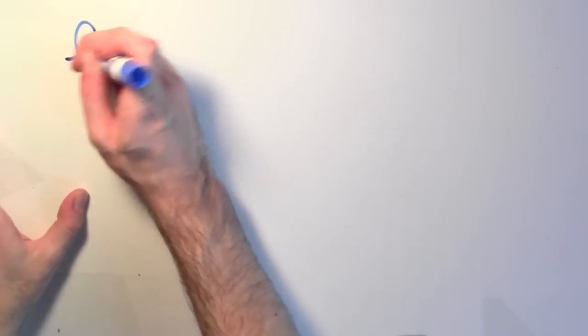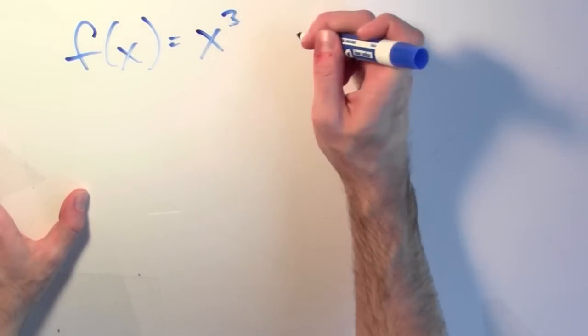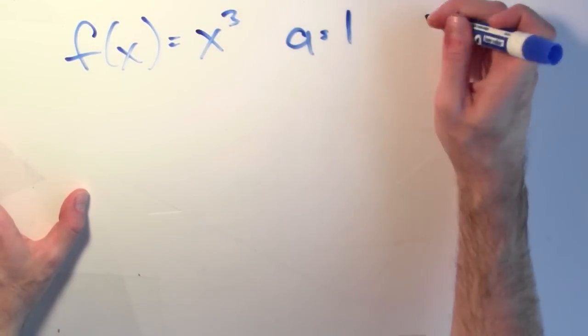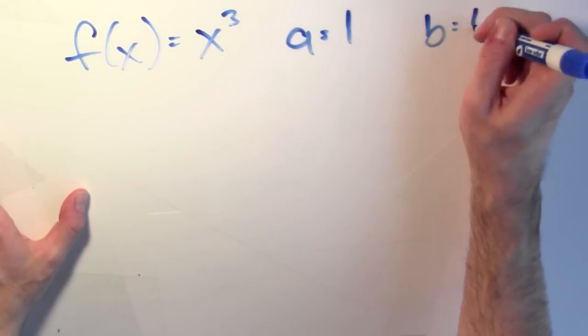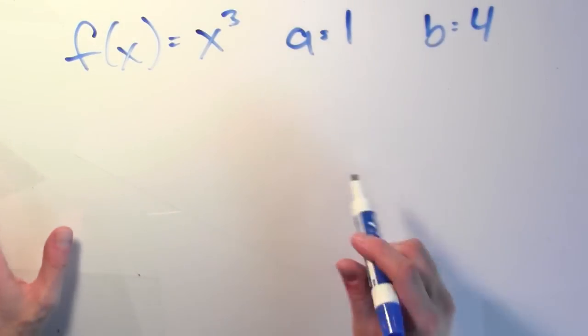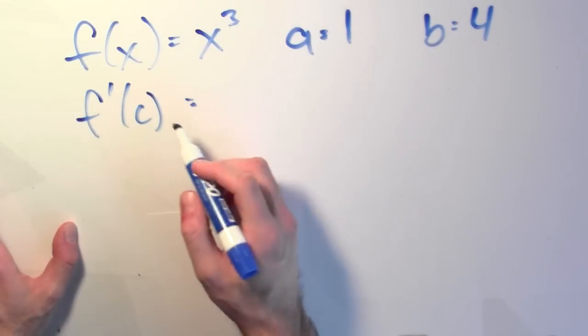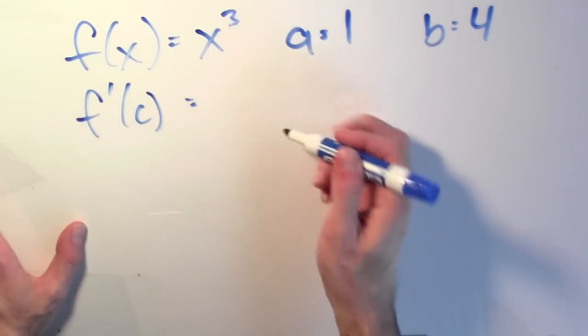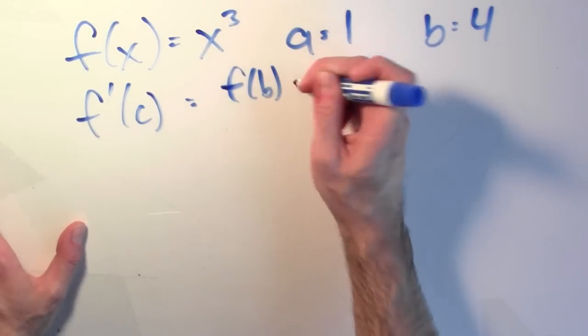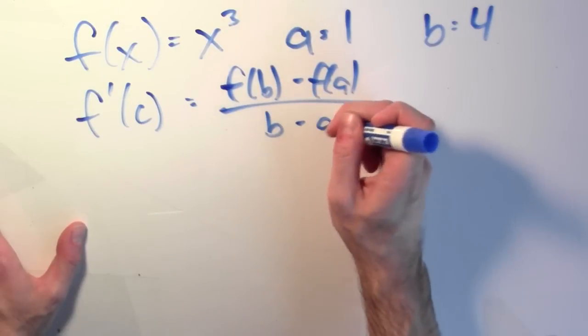Let's do an example where I try to find that point c. I'll have f of x equal x cubed on the interval where a equals 1 and b equals 4. So what I'm trying to do is find some point c so that the derivative of the function at c equals f of b minus f of a over b minus a.